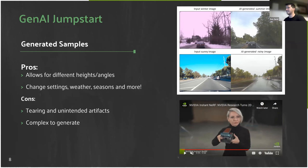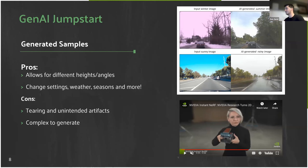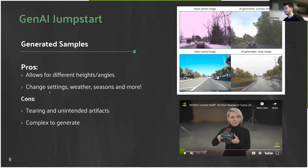Of course there are still downsides — this is not the end-all be-all. There is tearing and unintended artifacts in the generated images where areas haven't been fully filled in, or noise is added that can mess with the model. It's not fully representative of the real world because it's only an approximation, and it can be complex and expensive to generate many pictures during training if you don't have the machine time.